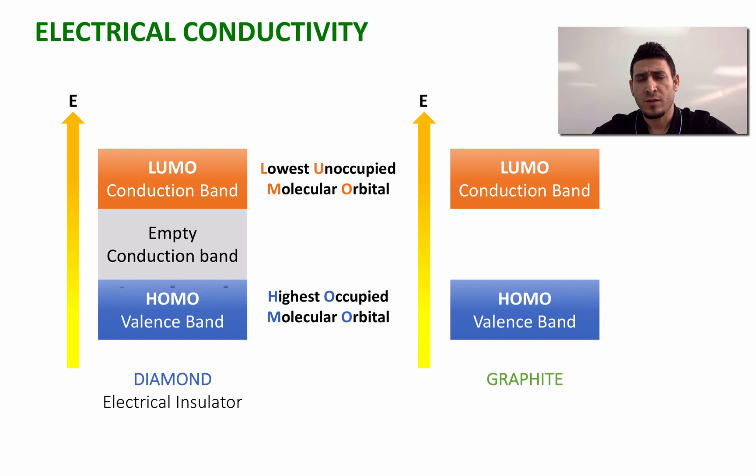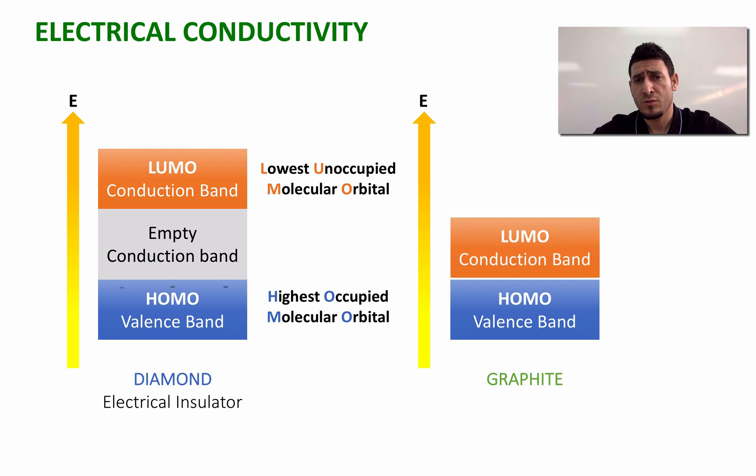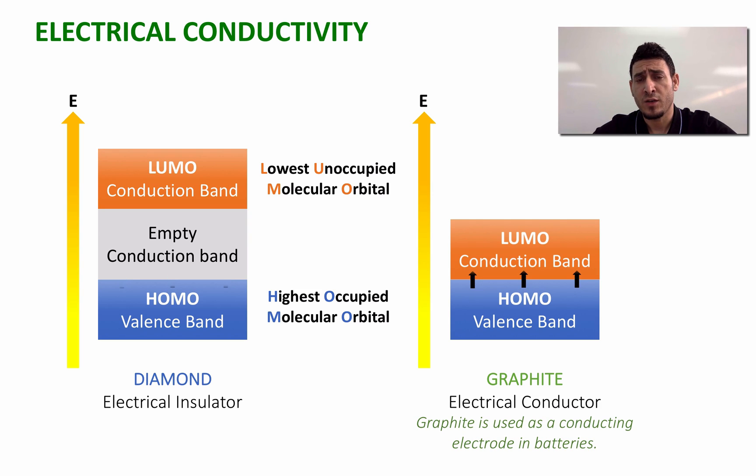However, if we take a look at the energy diagram of graphite, we can see that the energy of the LUMO is very close to that of the HOMO, and therefore it's easy to transfer electrons between the two bands, which makes graphite a good electrical conductor. By the way, graphite is used as a conducting electrode in batteries.